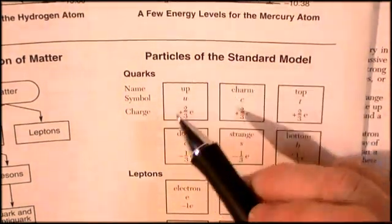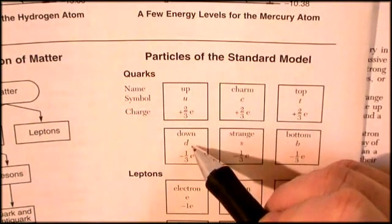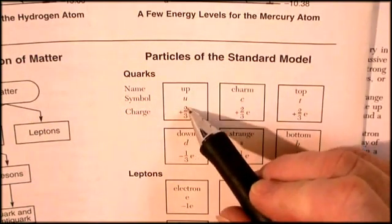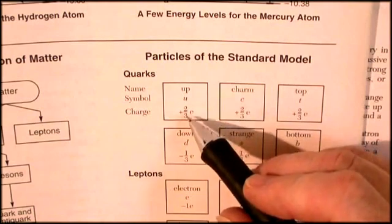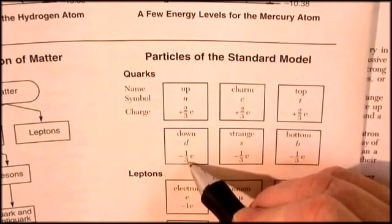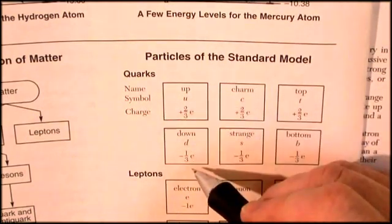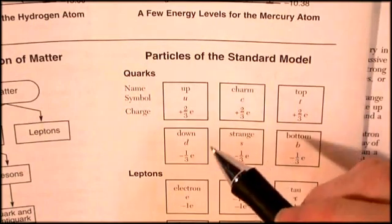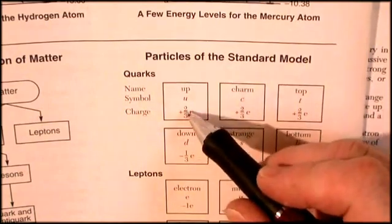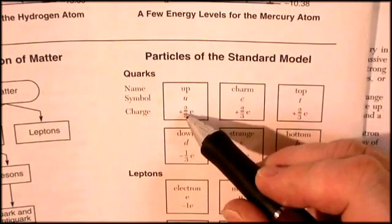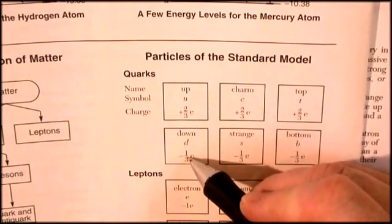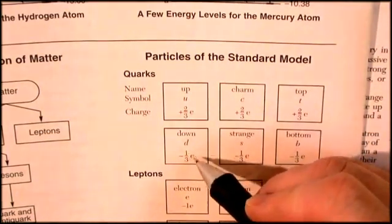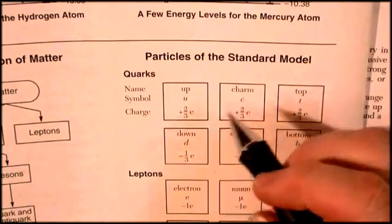And you might recall that a proton is two ups and a down. Positive two-thirds, positive two-thirds for four-thirds, minus a third for three-thirds for a charge of positive one. The neutron is an up quark, positive two-thirds, and two down quarks, minus a third and minus a third for a total of zero-thirds or a charge of zero.